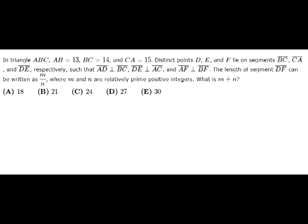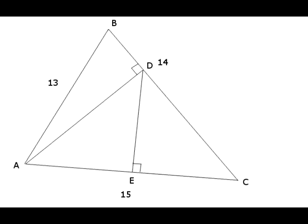This is problem 23 of American Math Competition 10B, 2013. Triangle ABC has side lengths 13, 14, and 15.